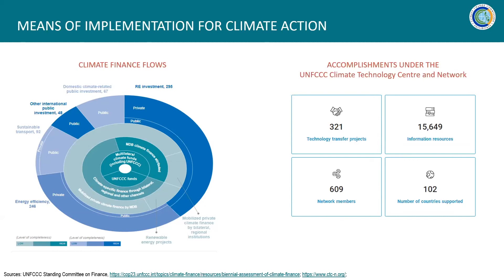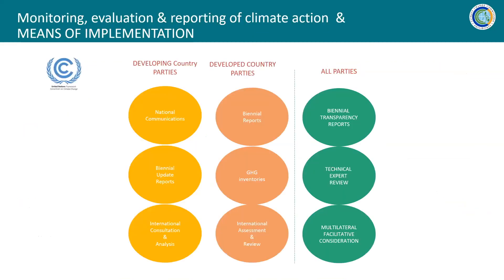In terms of technology, the UNFCCC has a Climate Technology Center and Network, which provides technology transfer, technical assistance, and financial delivery of technological instruments to countries availing of support under the network. In terms of monitoring, evaluating, and reporting on climate action and means of implementation, the UNFCCC has institutionalized various reporting requirements to support the global community in taking stock of what needs to be done to further curb the impacts of climate change.